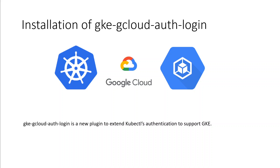GKE or Google Kubernetes Engine users will need to download and use a separate authentication plugin to generate GKE-specific tokens. This new binary, gke-gcloud-auth-plugin, uses a Kubernetes client Go credential plugin mechanism to extend KubeCTL's authentication to support GKE. Because plugins are already supported by KubeCTL, you can switch to the new mechanism now before version 1.26 becomes available.